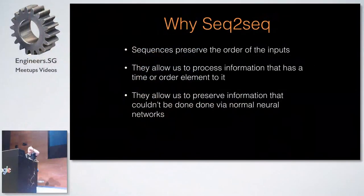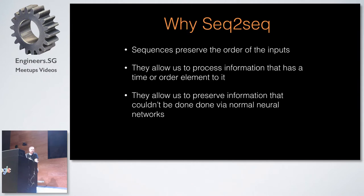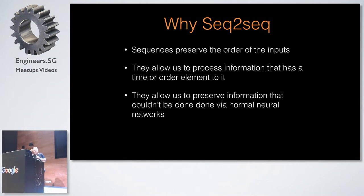So why sequence-to-sequence? The key thing with these is that sequence preserves the order of the input. With normal basic neural nets, there's no really good way to represent the concept of time and things changing over time. Sequence-to-sequence models allow us to process information that has a time or order element to it and preserve information that couldn't be done with normal neural networks.